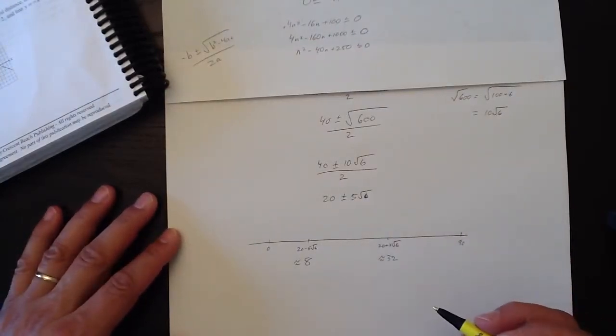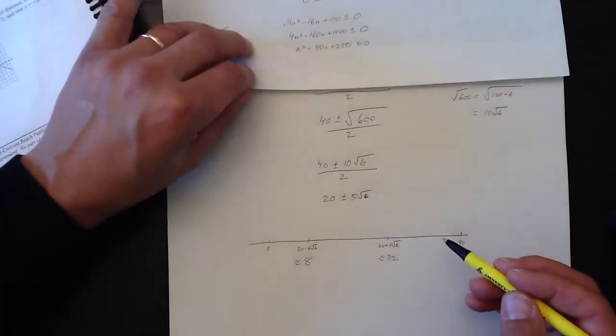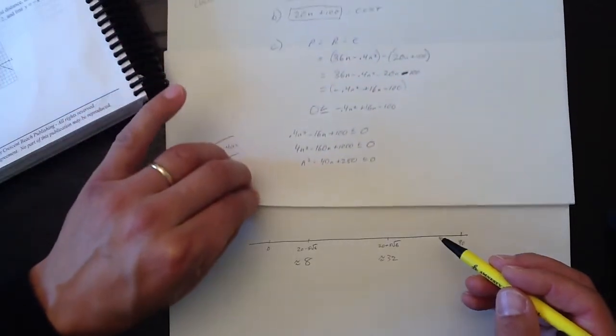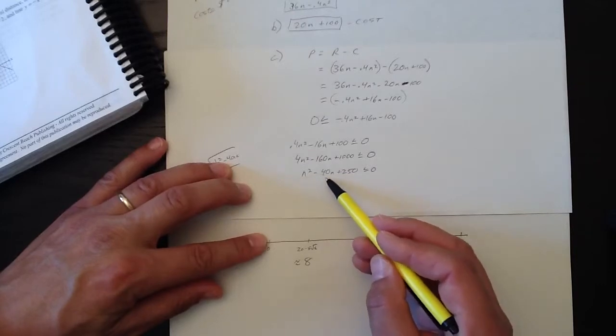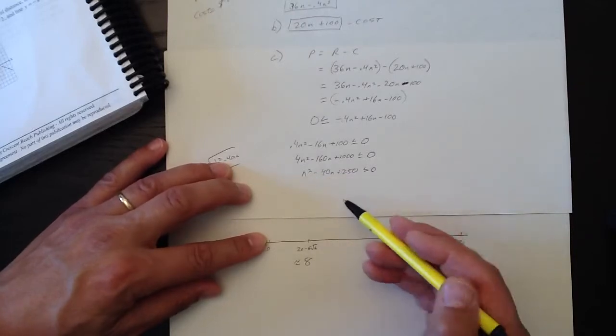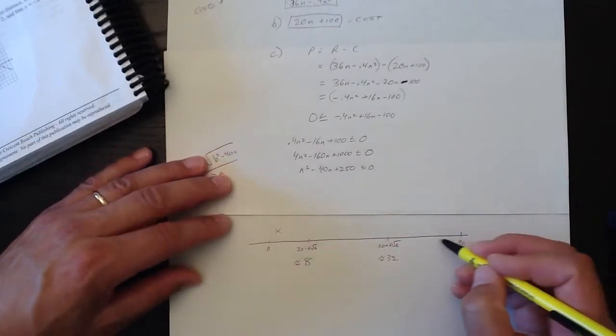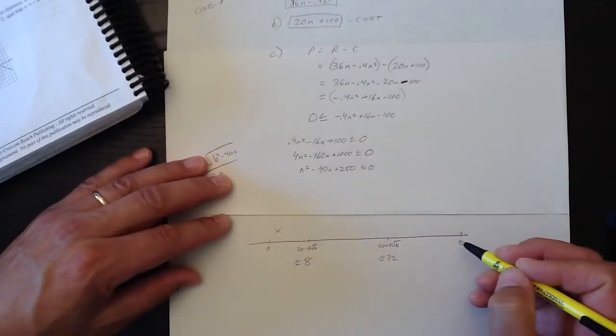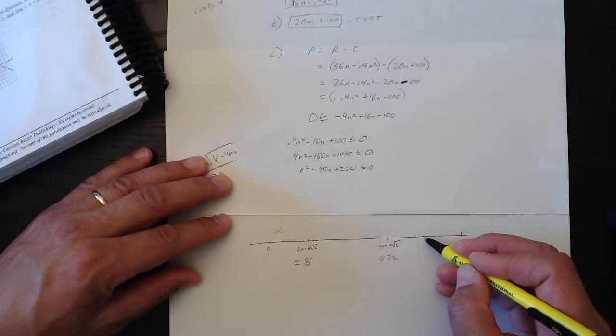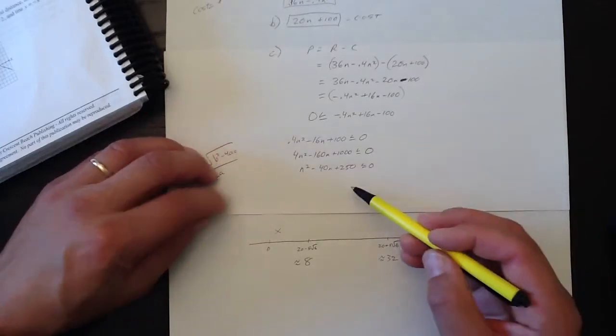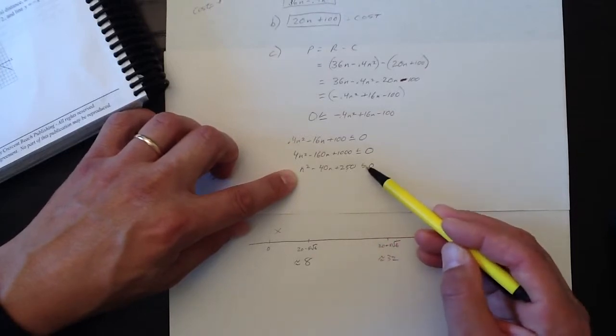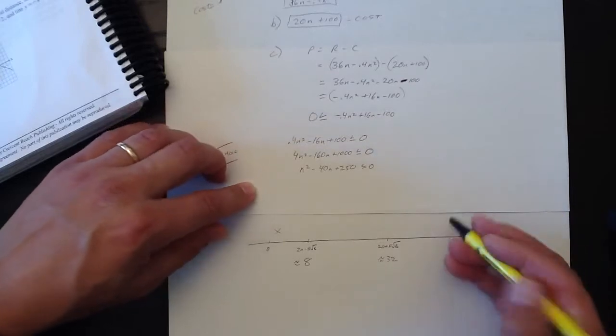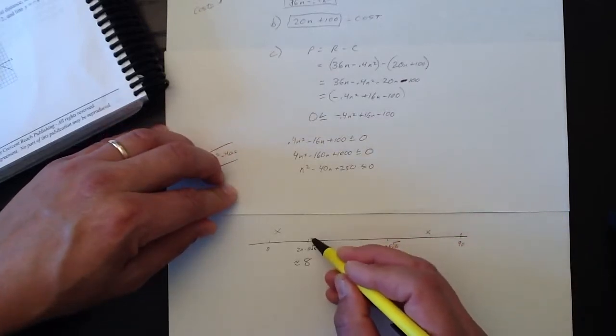The question is, is 0 in the solution set? Let's test it. 0 minus 0 plus 250 less than or equal 0. No, it's not. So, it's not down here. Is 50 in the solution set? That's 2,500 minus 2,000 plus 250 is about 750. So, no. That's not correct either. So, it's not up here. So, this is our solution set in here.